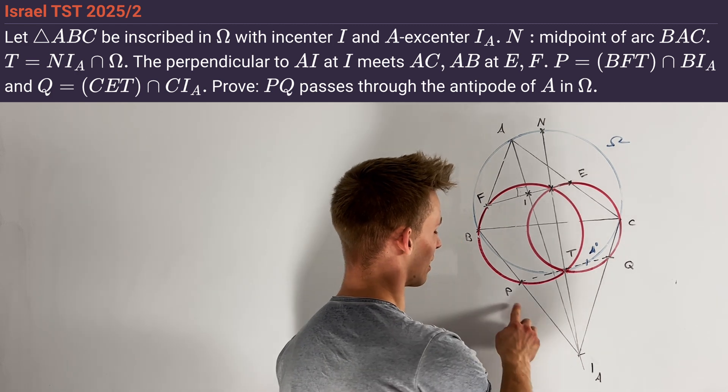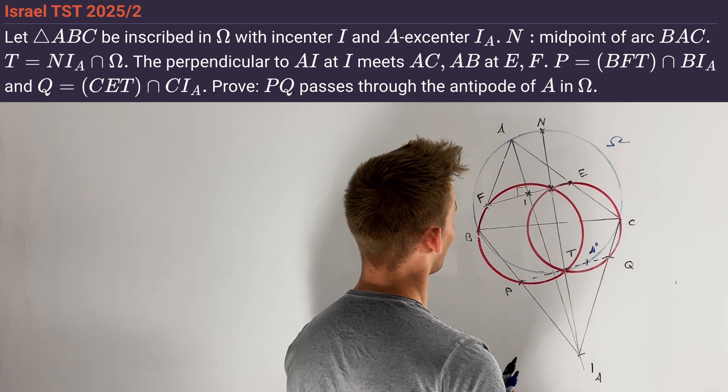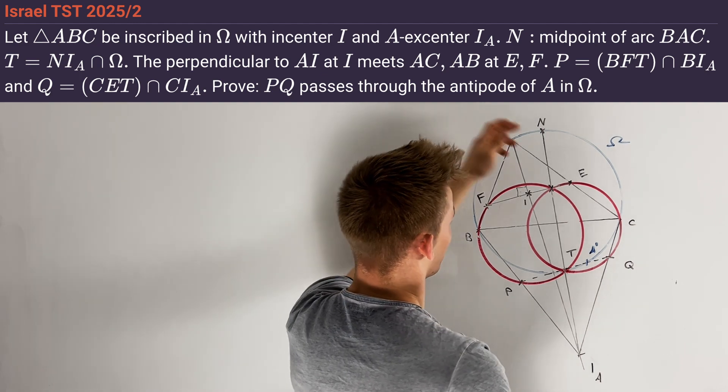Our task is to prove that the line PQ passes through the point A' which is defined as the point opposite to vertex A on the circumcircle Ω.